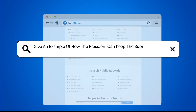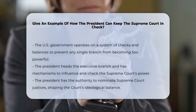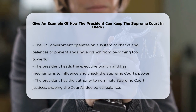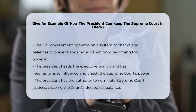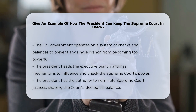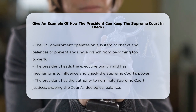How the President can keep the Supreme Court in check. The system of checks and balances in the U.S. government ensures that no single branch of government becomes too powerful. The president, as the head of the executive branch, has several mechanisms to influence and check the power of the Supreme Court.